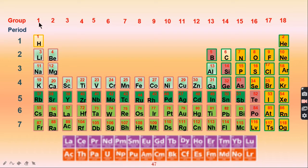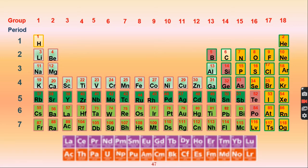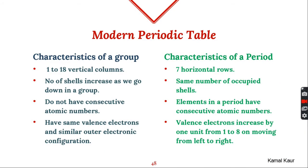Looking at group number 1, hydrogen has atomic number 1, the next has atomic number 3, then 11 — so atomic numbers are not consecutive in elements of a group. But along a period, the atomic numbers are 19, 20, 21, 22 — all consecutive. This is one of the key characteristics distinguishing a group from a period.